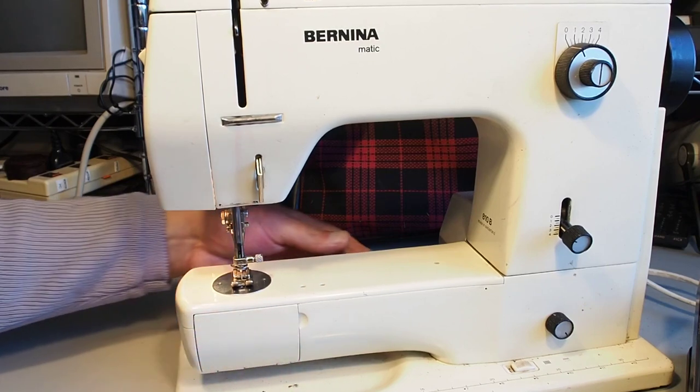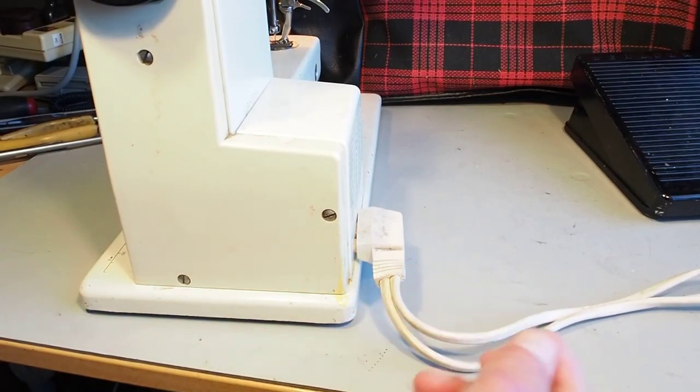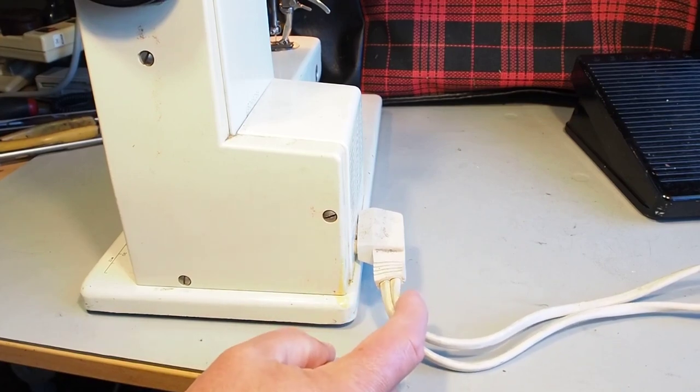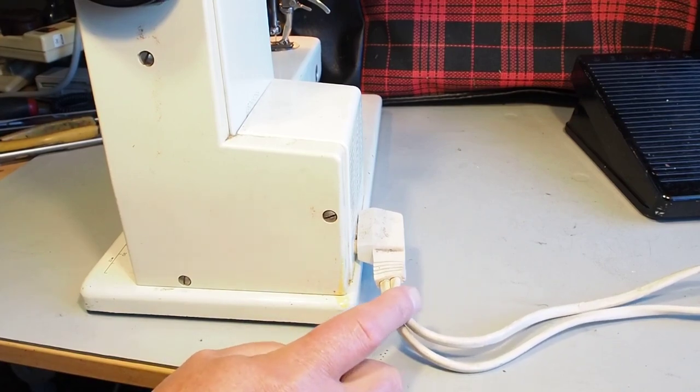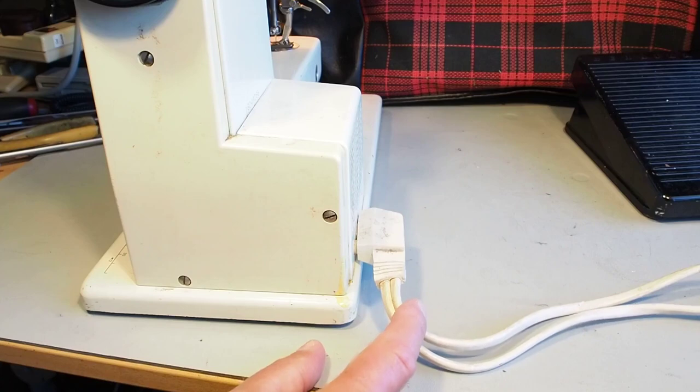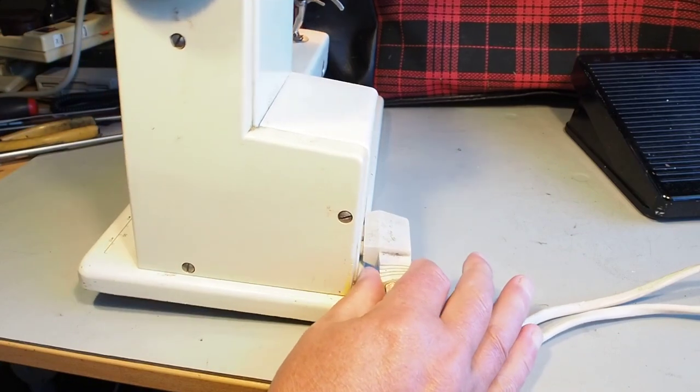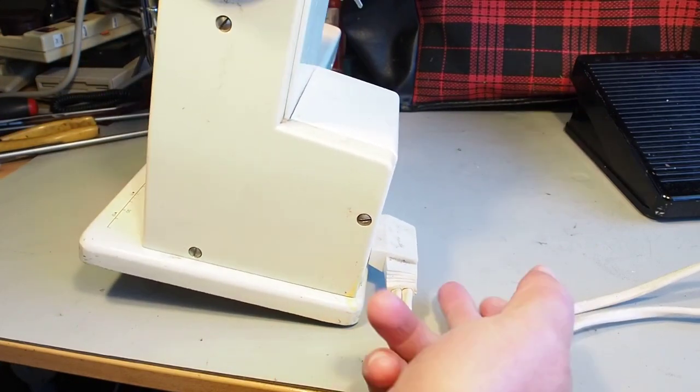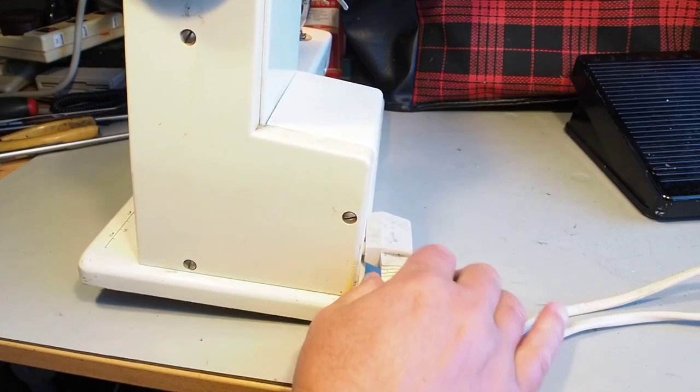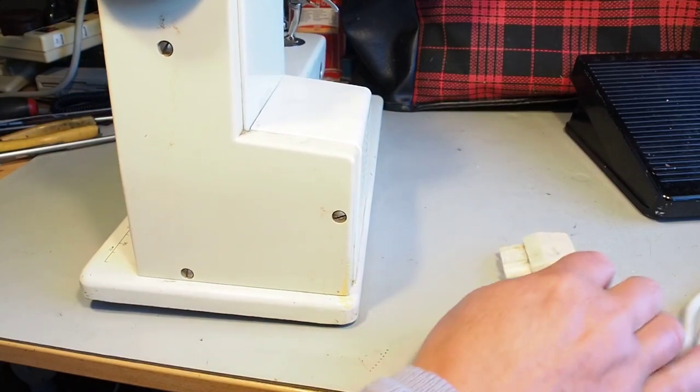But the first thing to do is to unplug the machine, remove the power plug here. Two reasons, one is you don't want to be accidentally stepping on the foot controller while you do this, because that could ruin your day. And the other reason is we'll be tipping the machine back just to get a better view and you don't want that levering against this plug and potentially breaking anything. So just remove that plug there.